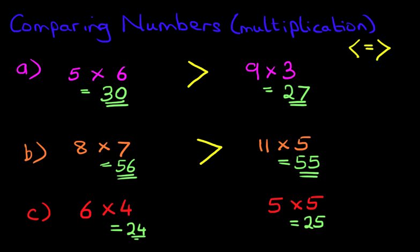So we are comparing 24 and 25. Which number is smaller? It is 24. So therefore, the arrow is pointing in this direction.